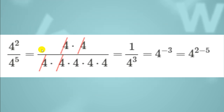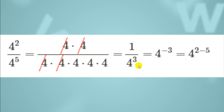Here you can see 4 raised to the power 2 divided by 4 raised to the power 5. In the numerator you multiply 4 twice by itself, and in the denominator 4 raised to the power 5 means 4 multiplied five times. The two fours in the numerator cancel with two of the fours in the denominator, leaving 1 divided by 4 raised to the power 3. Bringing that to the numerator changes the sign: you get 4 raised to the power 2 minus 5, which equals 4 raised to the power minus 3.